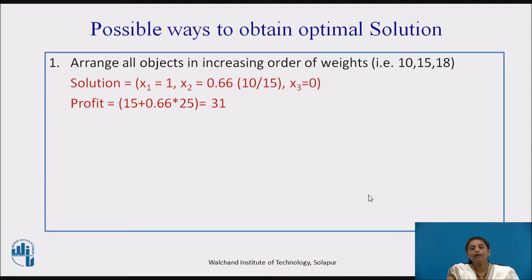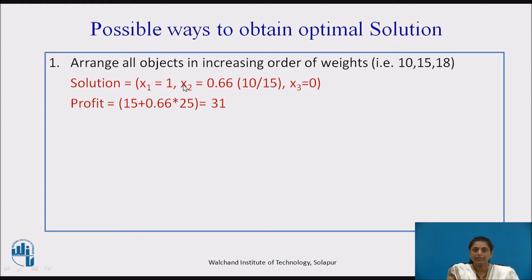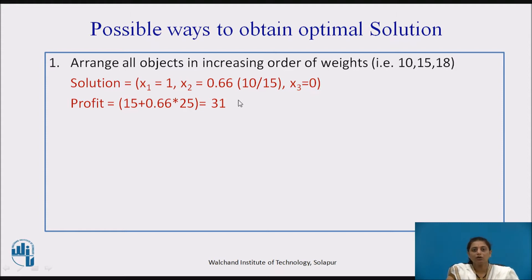One approach is to arrange all objects in increasing order of weight, so we can insert as many objects as possible. Arranging in increasing order of weight and filling the knapsack: we take the first object completely and only 10 parts of the second remain, so we take 10 by 15. The profit obtained is 31. But earlier we obtained 31.5, so this is not an optimal solution.